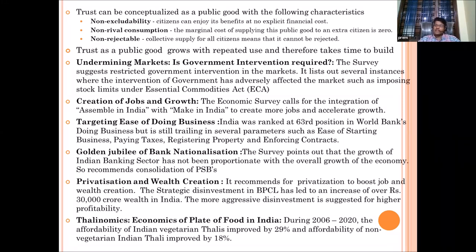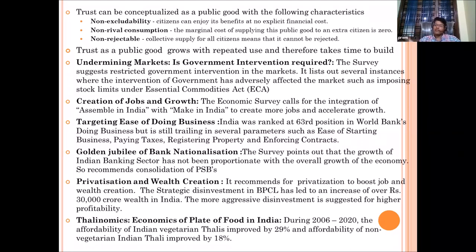On bank nationalization, economic survey acknowledges that in the 1970s all private banks became public sector banks, giving domination to public sector banks. However, it says instead of having 20-odd public sector banks, have four or five that are globally dominant — like creating more SBI-level banks ranked in the global top 100. This is asking for consolidation or merger of banks, not privatization. It might confuse you in options — the suggestion is consolidation to form fewer, larger public sector banks.